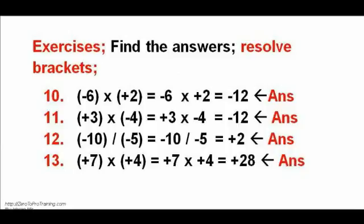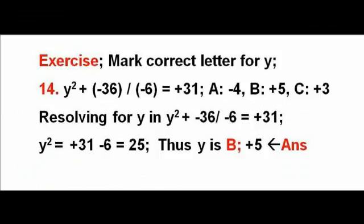Exercises 11, 12, and 13: after resolving brackets, add and subtract. The answers are −12, −12, −12, 2, and 28 respectively. Exercise: mark the correct letter as the answer — resolving brackets, division, multiplication, add and subtract — gives y² = 25 and y = ±5, which is answer B.